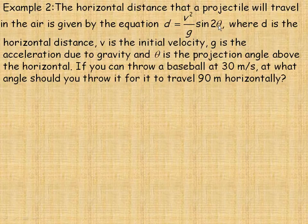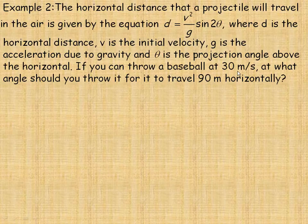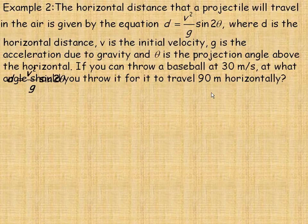Theta is the angle above the horizontal that it's thrown at. And we're asked if you can throw a baseball at 30 meters per second, at what angle should you throw it for it to travel 90 meters horizontally? So we'll start with our formula and substitute in the values.